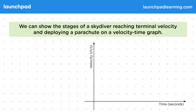First of all we'll set up our axes. A velocity-time graph has time on the x-axis and velocity on the y-axis. We'll use this graph to show how velocity changes over time. Now let's look at the different parts of the graph and the shapes they'll have.